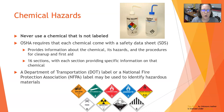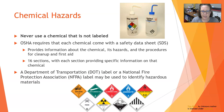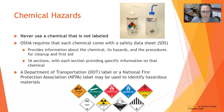Every chemical must be in a labeled container — even water. OSHA requires that each chemical come with a Safety Data Sheet that provides information about the chemical, its hazards, and procedures for cleanup and first aid. These are divided into 16 standardized sections. We can also use a Department of Transportation label or a National Fire Protection Association label to identify hazardous materials.